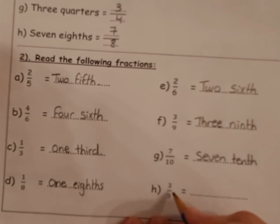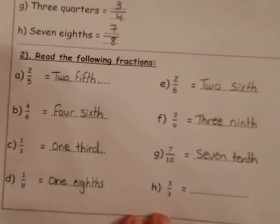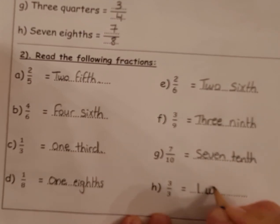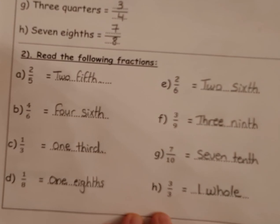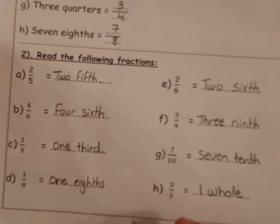Three over three, it will make what? One whole. Because I will take three parts from the three, so I will take it all, so it will be one whole.